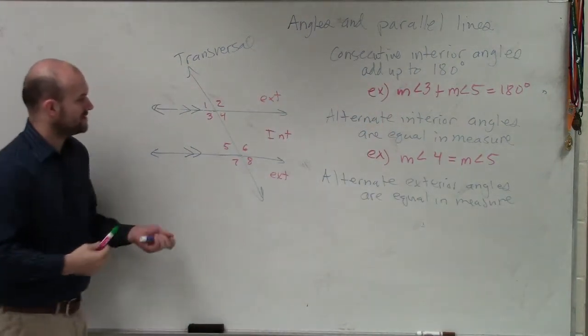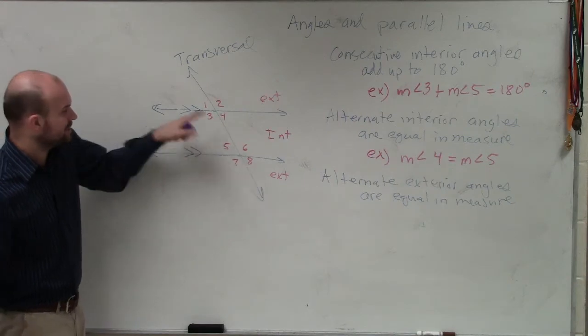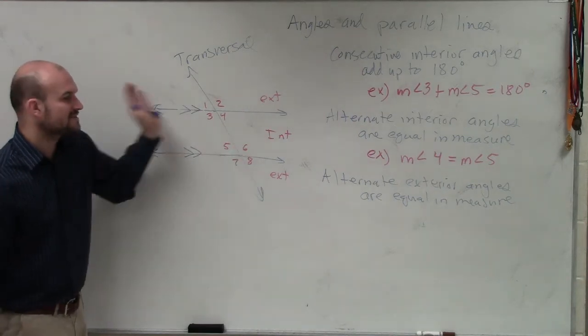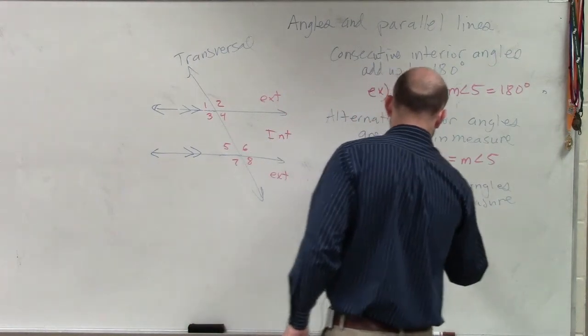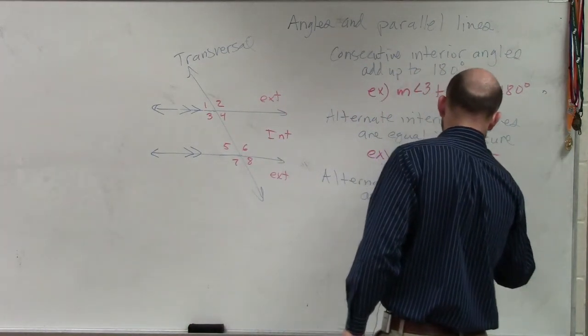So therefore, an example of alternate exterior, angle eight is exterior, angle one is exterior. They're on different sides of the transversal. So therefore, I can say, example, the measure of angle one is equal to the measure of angle eight.